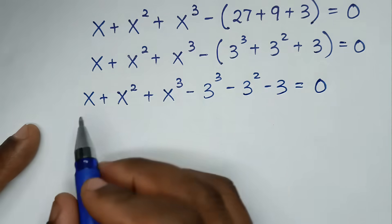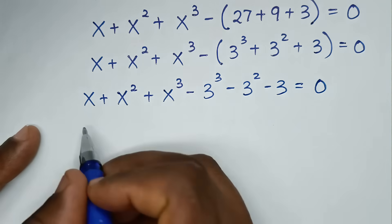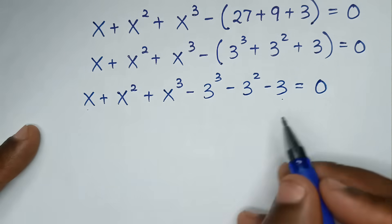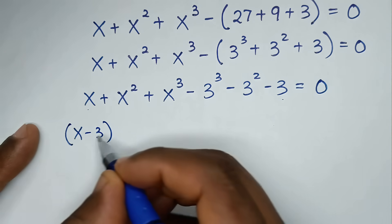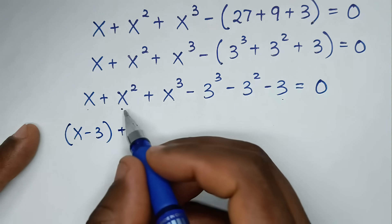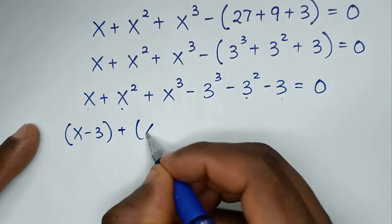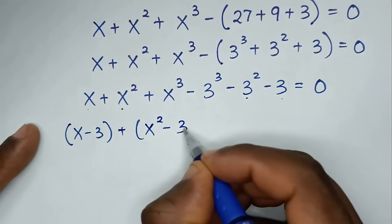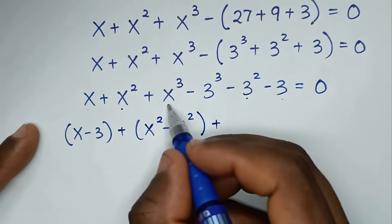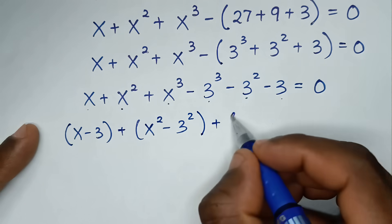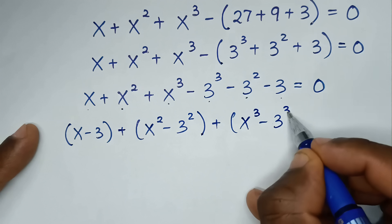Then we place like powers together, so it will be x minus 3, so here x minus 3 bracket, plus x squared minus 3 bracket, plus x power of 3 minus 3 power of 3.